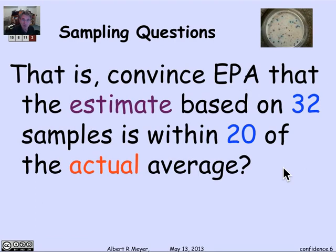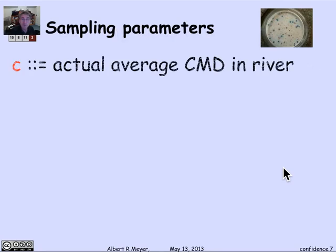Can we convince the EPA that the actual average is less than 200? We're trying to convince them that our estimate, based on the sample, is within 20 of the actual average. We got 180, so if our estimate is within 20 of the truth, then the average is less than 200. How are we going to do that? Let's look at the parameters in the pairwise independent sampling theorem and see what we have.